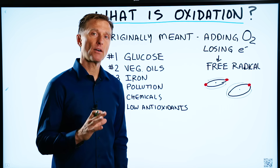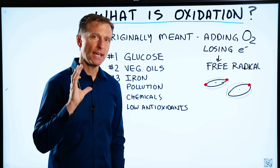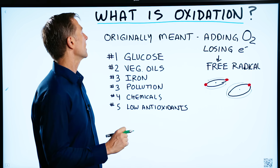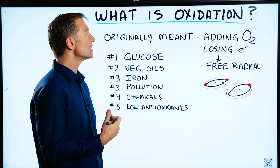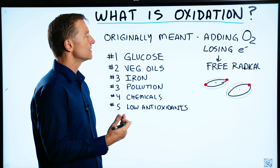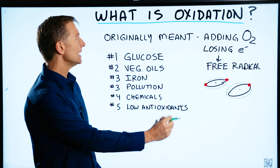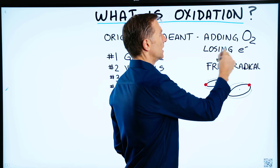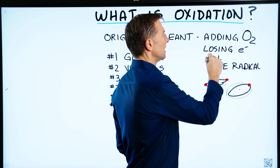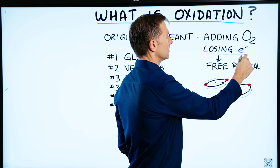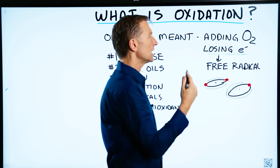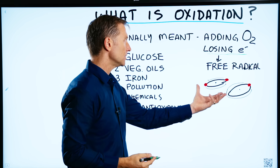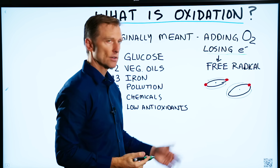Today we're going to talk about oxidation — a very exciting topic. Originally, this meant adding oxygen to a compound and the losing of an electron. When you lose an electron from an atom, you create a free radical.